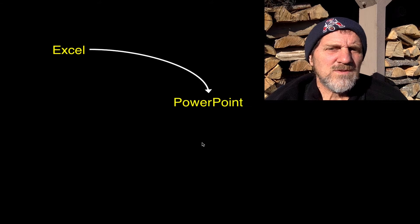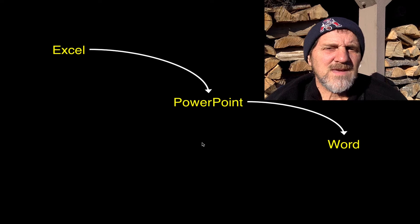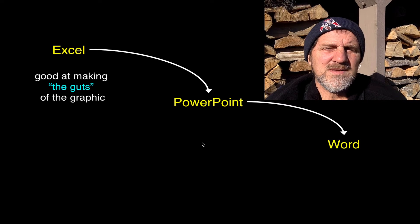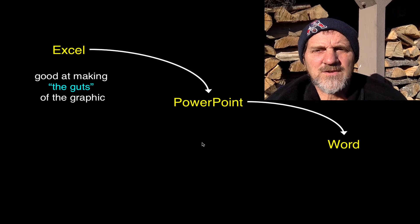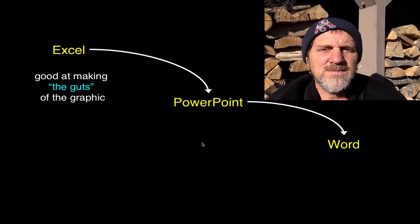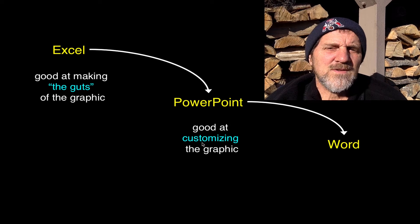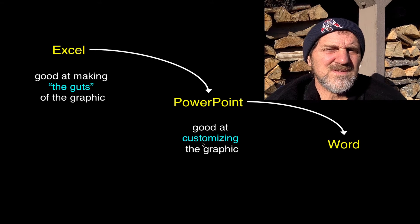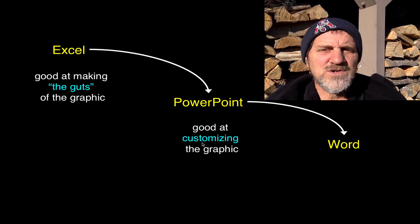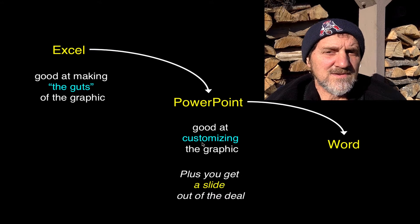What am I talking about? I'm talking about Excel going to PowerPoint going to Word. Excel is a good place to start — it's good at making the guts of your graphic, and it's probably where your data are anyway, if you've done any data transformations or calculations. But PowerPoint is good at customizing the graphic — adding objects, whether text, arrows, or shading, and moving them around. Plus you get a slide out of the deal.